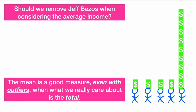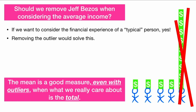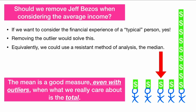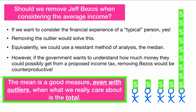For instance, should we remove Jeff Bezos when considering the average income? If we want to consider the financial experience of a typical person, then yes, we should follow the common advice to remove the outliers, or equivalently use a resistant method like the median, which is not affected by outliers. However, if the government wants to understand how much money they could possibly get from a proposed income tax, removing Bezos would be counterproductive. The mean income gives us the information we want in terms of taxation, because what we care about is the total, and his income could theoretically be taxed.